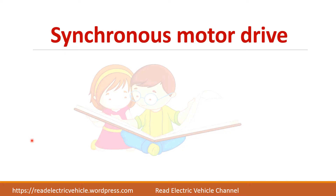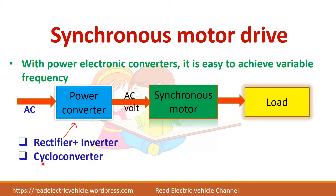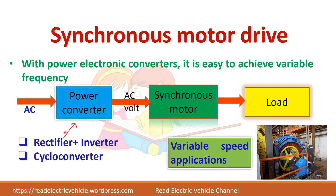The synchronous motor needs an AC voltage, and this input voltage should be variable voltage and variable frequency. We can use a power electronic converter which can convert fixed AC voltage and frequency into variable voltage and frequency. We can use either a rectifier and inverter combination — the rectifier converts AC to controlled DC, which is given as input to the inverter — or we can use a cycloconverter, which is also called a frequency changer, where the input frequency can be different from the output frequency. By using power electronic converters, we can achieve variable speed applications in synchronous motor drives.